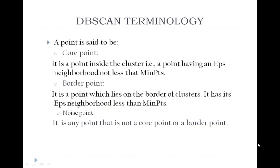Let us know the DBSCAN terminology. A point is said to be a core point if it is a point inside the cluster, that is, a point having an epsilon neighborhood not less than min points. A point is said to be a border point if it lies on the border of the cluster, that is, it has its epsilon less than that of the min points. Any other point which is not a core point or a border point is a noise point.